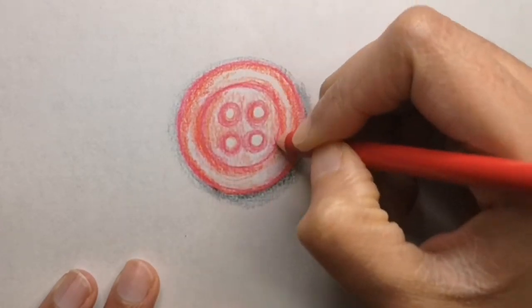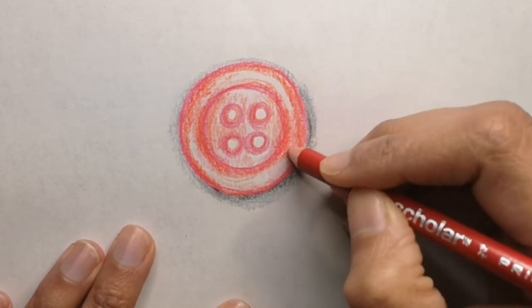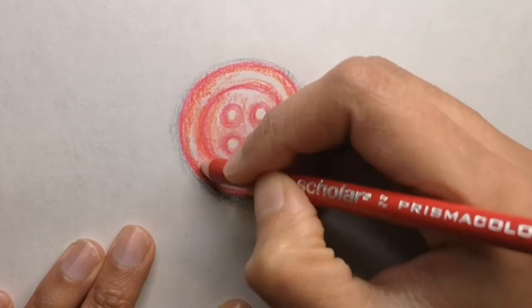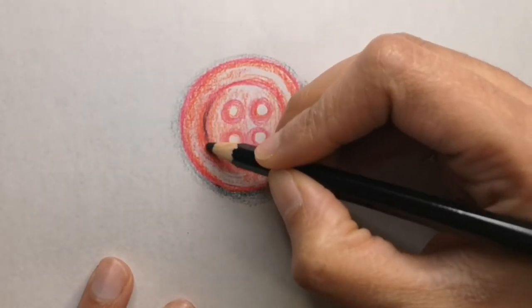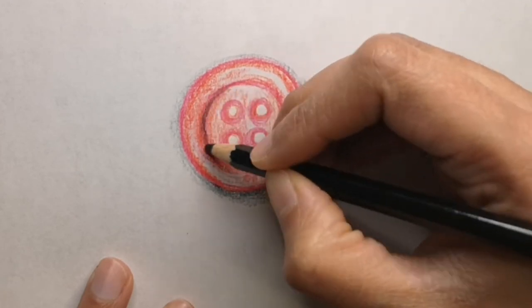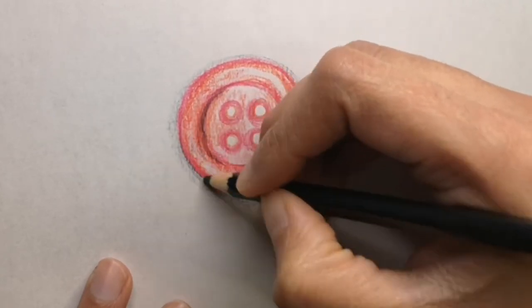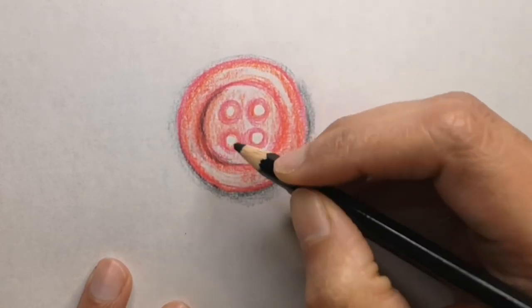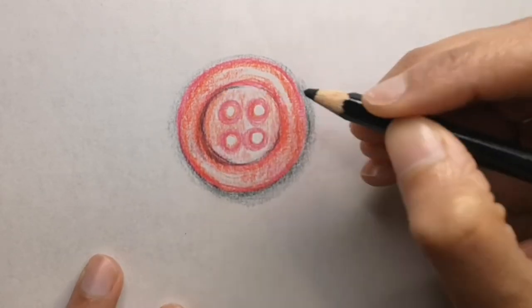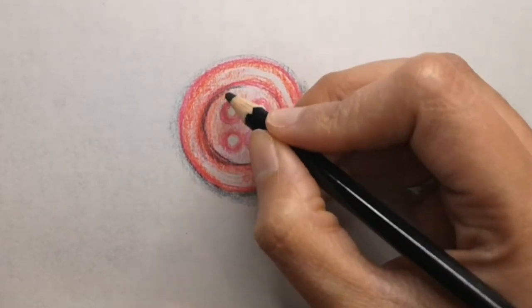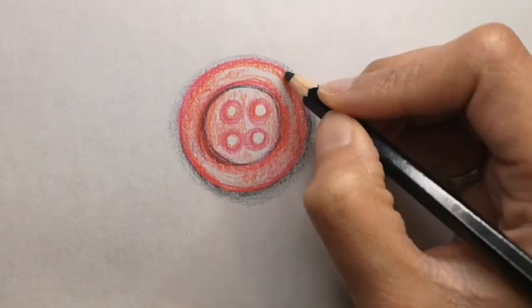If you need good color pencils and art supplies check the description box below. I'm also using prism color color pencils. I find them good for shading because they have a thick layer that applies and Faber-Castell is great for defining lines. The first predominant modern use of buttons originates in Europe around 13th century possibly in France or Germany and they quickly became popular as did the newly invented button hole.